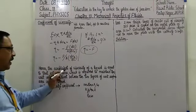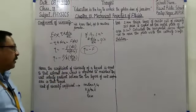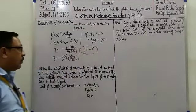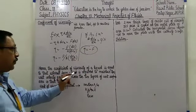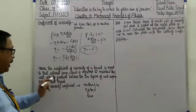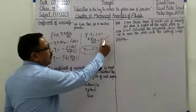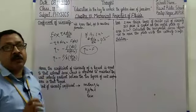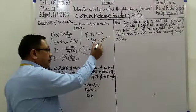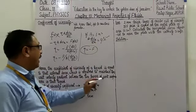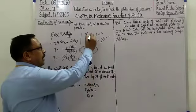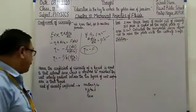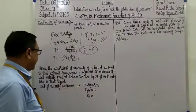Hence the coefficient of viscosity of a liquid is equal to the external force required to maintain unit velocity gradient between two layers — यानि 2 layers के middle में जो velocity gradient हो वो unit (one per second) हो — of a unit surface area in that liquid (area = 1 unit)। Then coefficient of viscosity eta is equals to minus F।